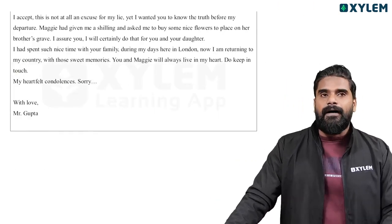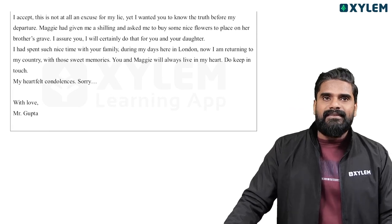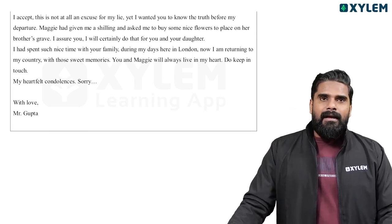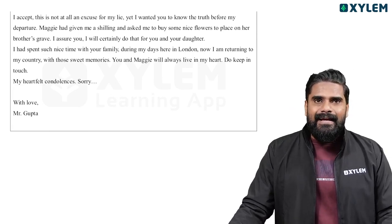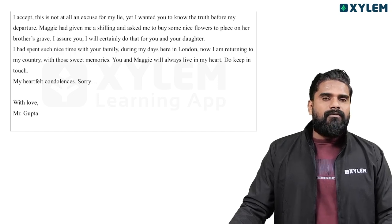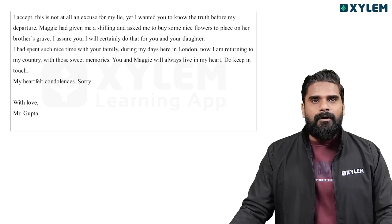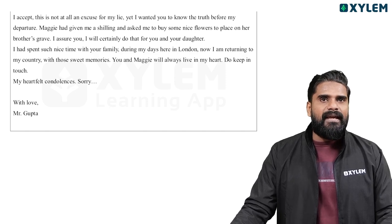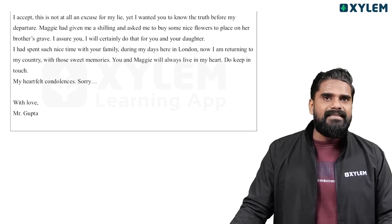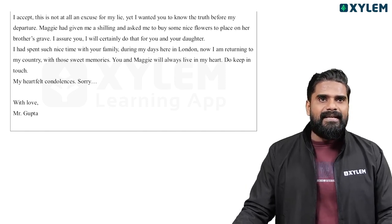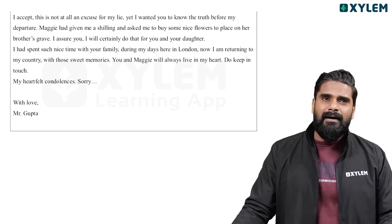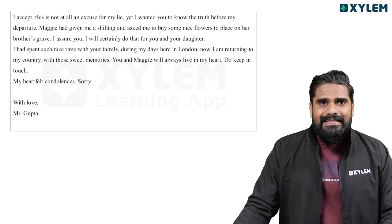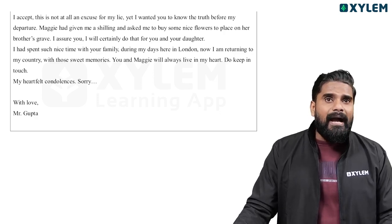I could do that much for Maggie, my little sister, who would have become an orphan without you. I accept this is not at all an excuse for my lie. Yet I want you to know the truth before my departure. Maggie had given me a shilling and asked me to buy some nice flowers to place on her brother's grave. I assure you I will certainly do that for you.